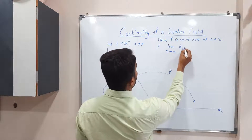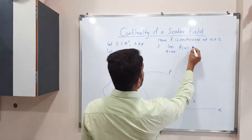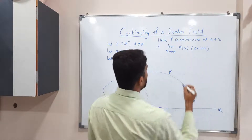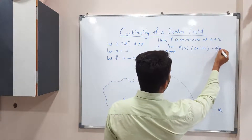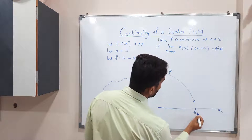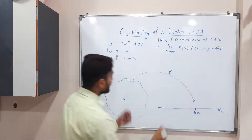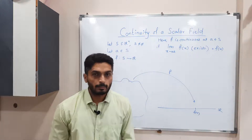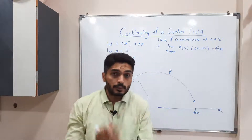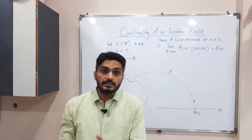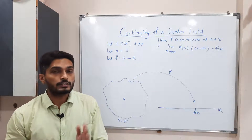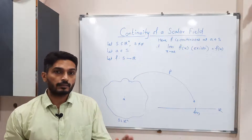This limit should exist and it should be equal to F(A). F(A) is the image of A under F. So when this limit exists and equals the value F(A), we can declare the function is continuous at A.